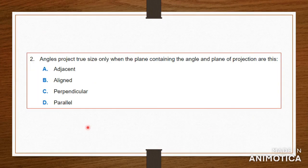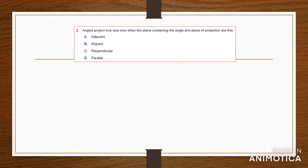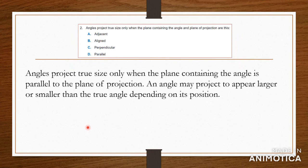Number two: angles project true size only when the plane containing the angle and the plane of projection are — A: adjacent, B: aligned, C: perpendicular, or D: parallel? The answer is when they are parallel to the plane of projection. So if you are drawing an isometric drawing and the line is parallel with whichever axis you are using, you would be getting the true size.